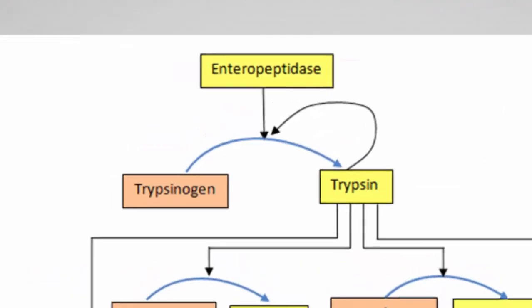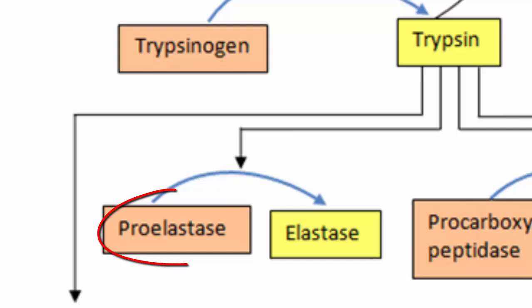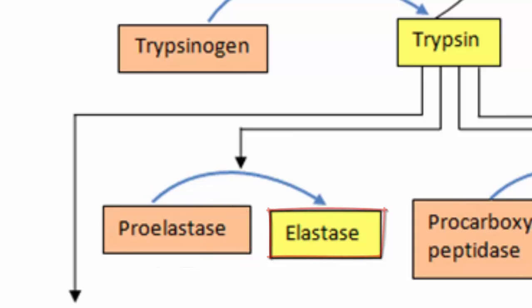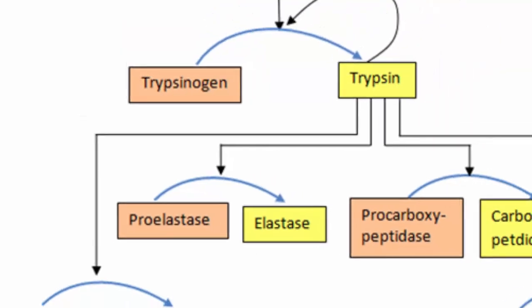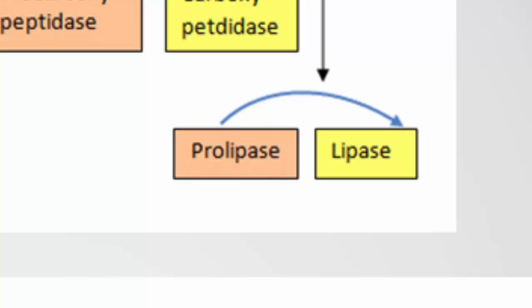For example, trypsinogen is an inactive parent enzyme. Trypsinogen gets active only when it is cleaved by enteropeptidases, converting it into active trypsin. Similarly, proelastase is converted into active elastase with the help of trypsin. Zymogens are inactive forms that need an enzyme to cleave them to become the active daughter enzyme — for example, chymotrypsinogen to chymotrypsin, and prolipase to lipase.